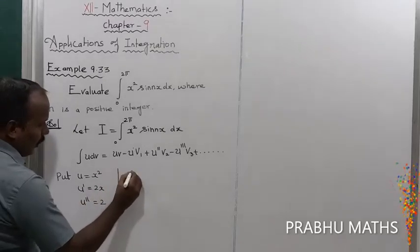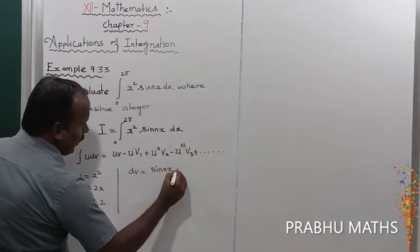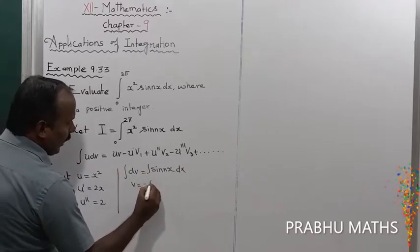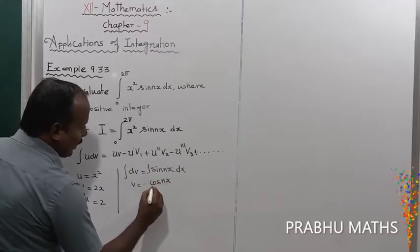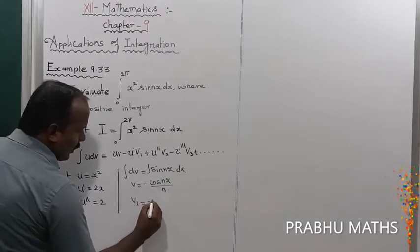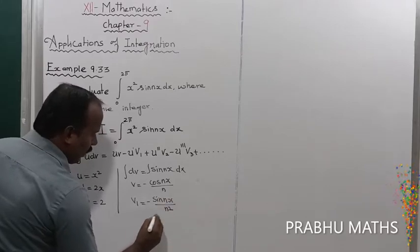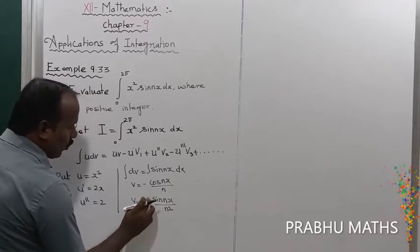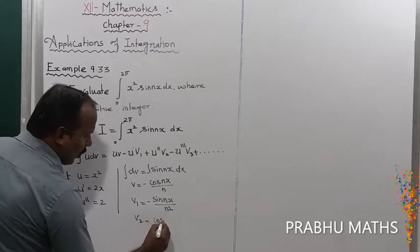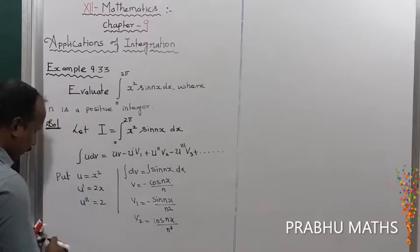Next, dv = sin(nx) dx. Integrating both sides, v = −cos(nx)/n. Then v₁ = −sin(nx)/n², and v₂ = cos(nx)/n³.